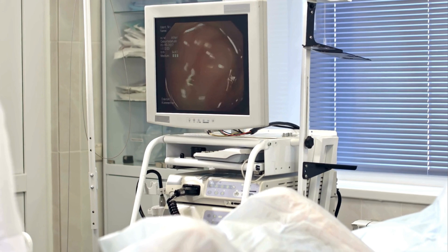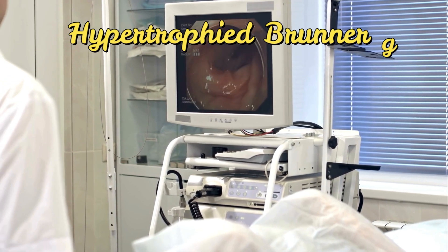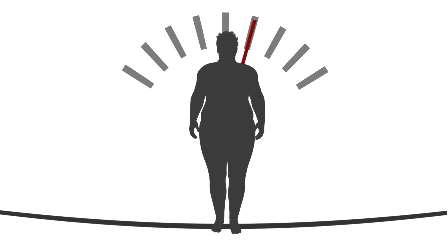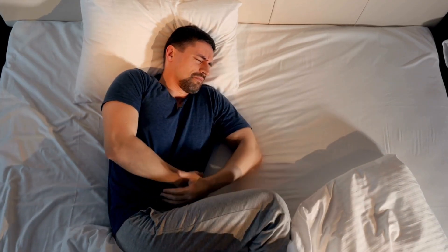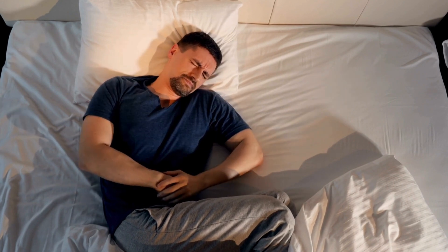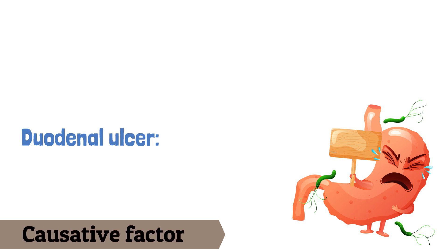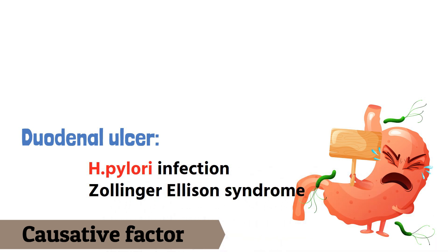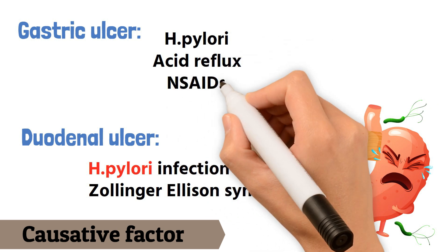Diagnostic endoscopic biopsy will show hypertrophy of the Brunner glands in duodenal ulcers. Patients with duodenal ulcers tend to gain weight as they eat to relieve pain; this classic pain occurs two to five hours after a meal and usually at night. Duodenal ulcers are almost always due to H. pylori infection, with a small amount due to Zollinger-Ellison syndrome. In gastric ulcers, around 75 percent are due to H. pylori infection and the rest due to acid reflux and NSAIDs.